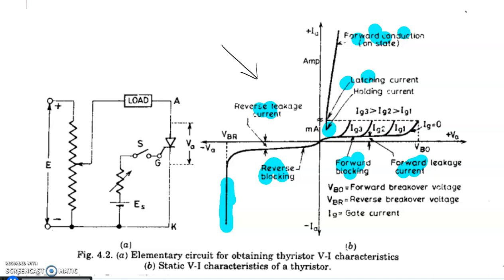This is a very important topic which you need to understand, particularly how the concept of latching current and holding current is important in the turning on and turning off process. The thyristor is a semi-controlled device — you have control only over the turning on process, not the turning off process. For turn-off, you need other kinds of circuits integrated into the system, and that is where the importance of holding current comes into the picture. So that is where we conclude the static IV characteristics of the thyristor.